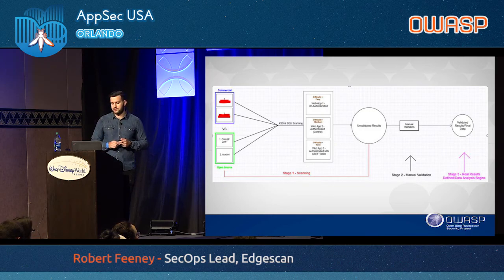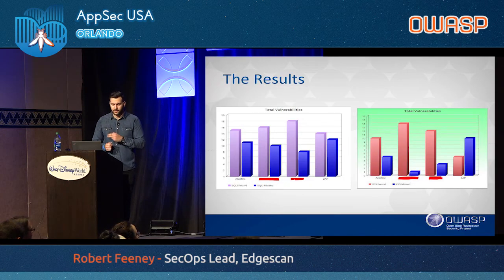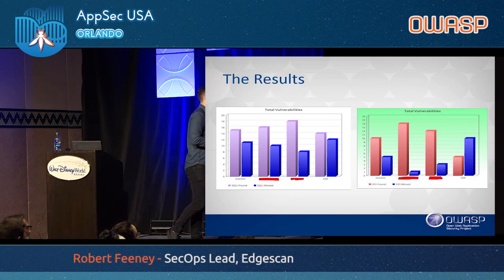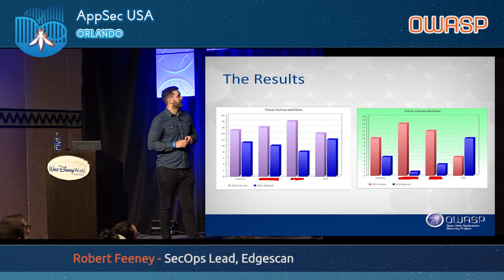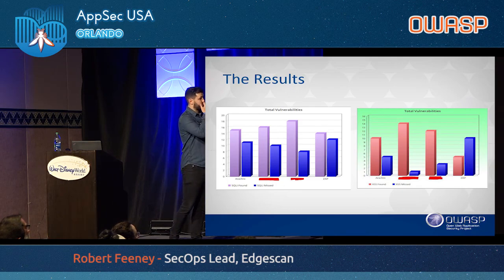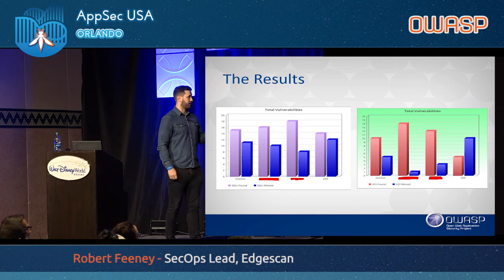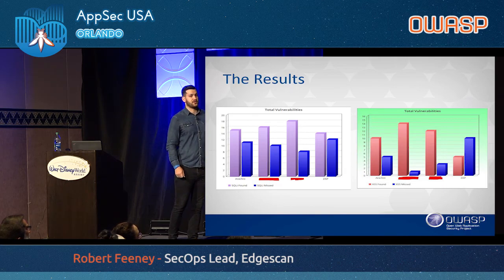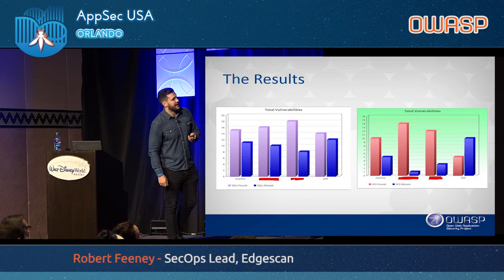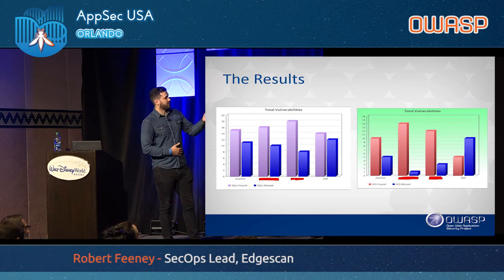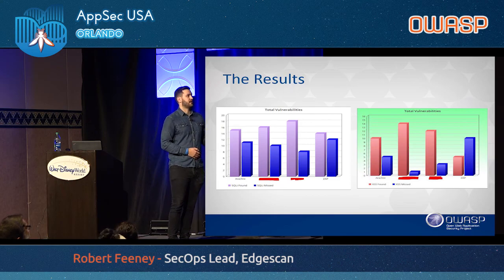The results showed SQL injection statistics on the left — not too much difference between tools. The tool that found the most found 18 SQL injection issues, and the least found 14. Thankfully, all tools identified more issues than they missed. Unfortunately, the same cannot be said for cross-site scripting: the tool that found the most found 14, while the tool that found the least only found five — it actually missed more cross-site scripting issues than it found.